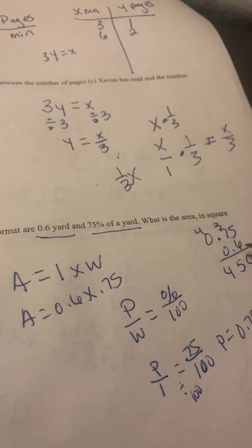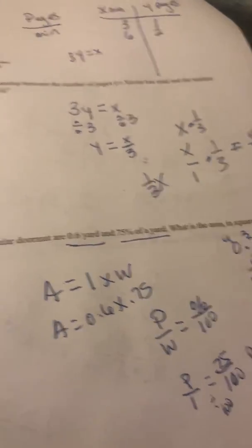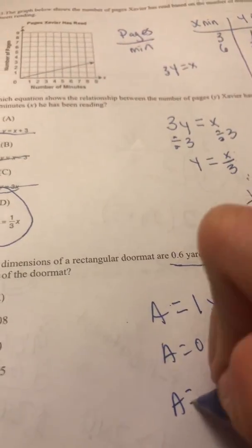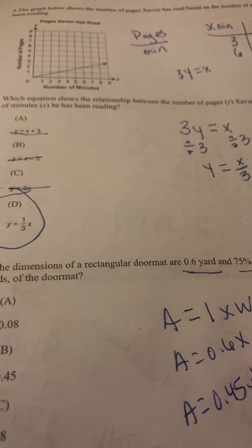Okay, and now I have 1, 2, 3 decimals, so I'm going to move 1, 2, 3. So it is going to be area is going to be equal to 0.45 yards squared.